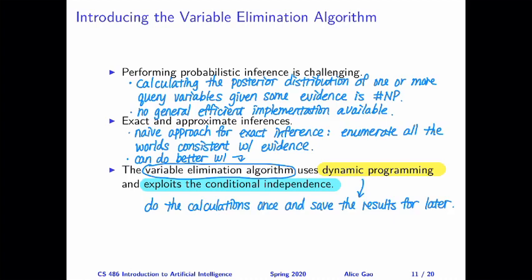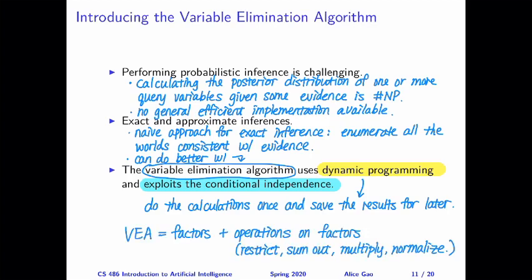Before we look at the details of the variable elimination algorithm, let me summarize it in one sentence. In the variable elimination algorithm, we will first define factors, then perform operations on these factors to get the results of the probabilistic inference we want. I will first define what a factor is, and then discuss four different operations we can perform on factors: restrict, sum out, multiply, and normalize.